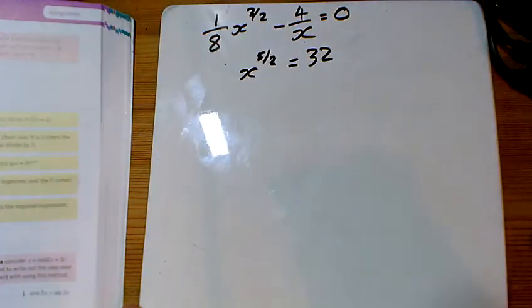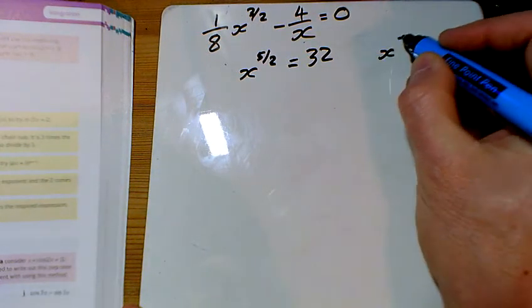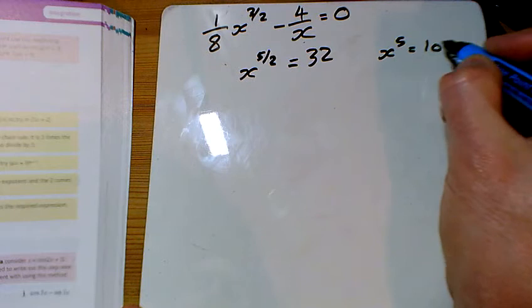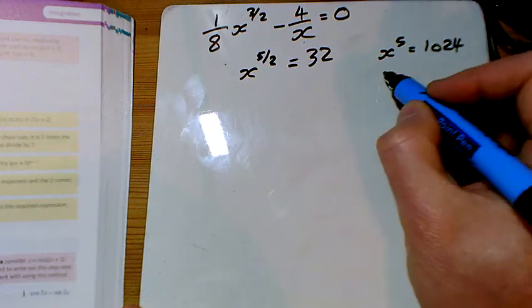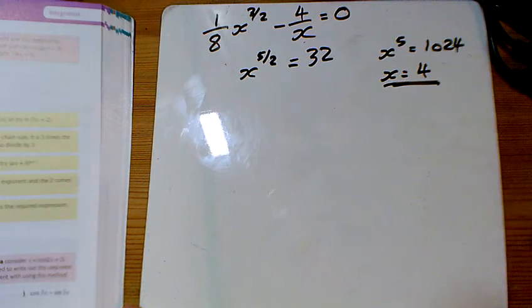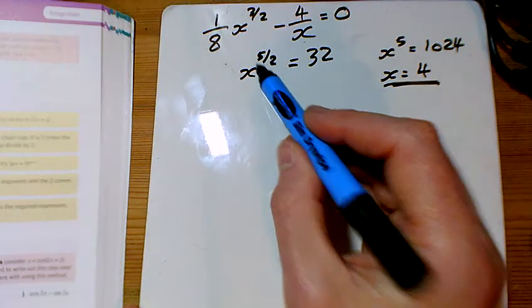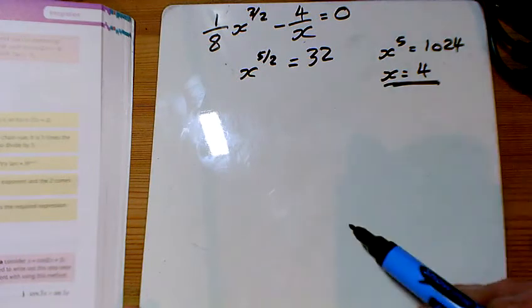And you could now do the 5 over 2 root, or you could say, well, let's square both sides. If you square both sides, you get 1024, and then if you do the 5th root of that, you get 4. Lots of other ways of doing that. You could have done the 5th root first, and then square it.